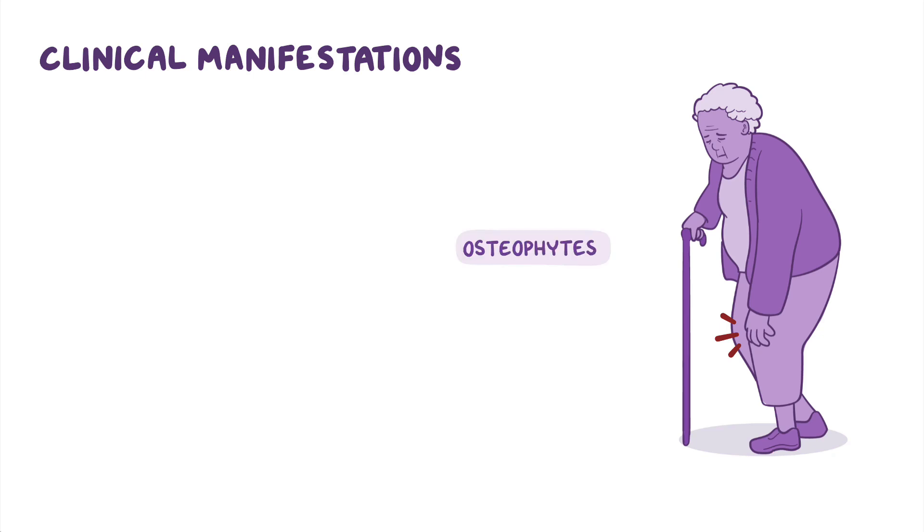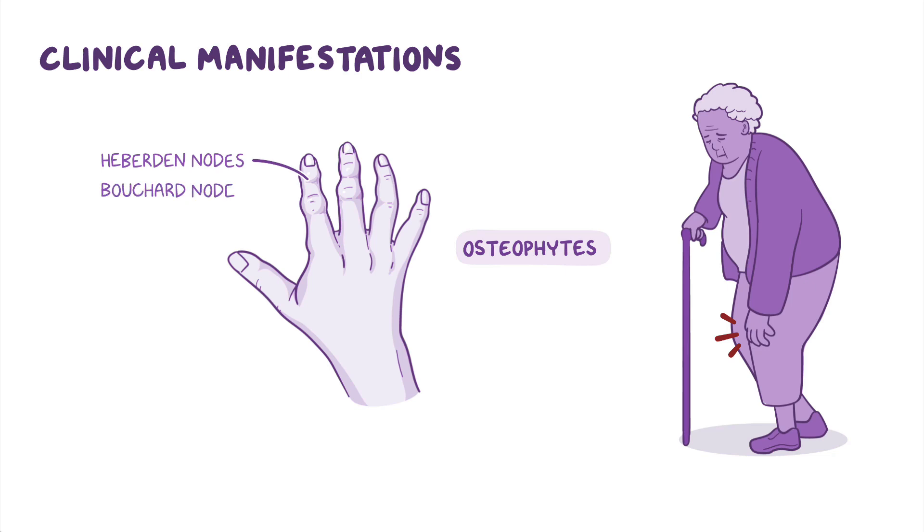Finally, osteophytes might be visible as subcutaneous nodules over the affected joints. Osteophytes in the distal interphalangeal joints are called Heberden nodes, while in the proximal interphalangeal joints are called Bouchard nodes.